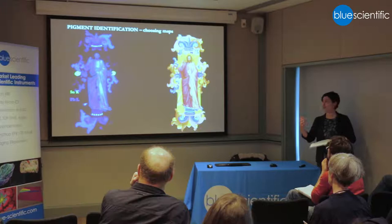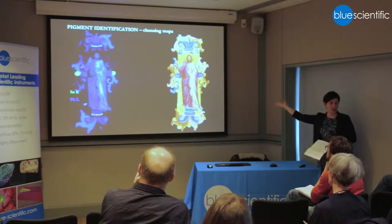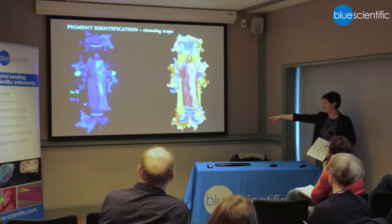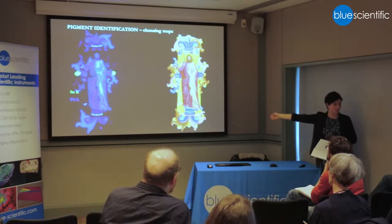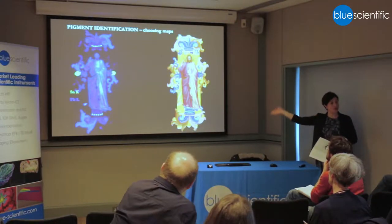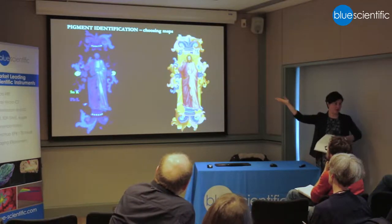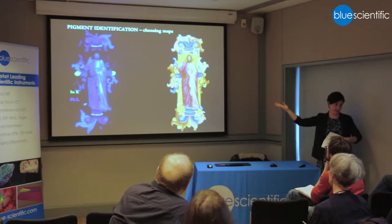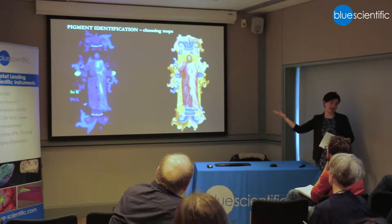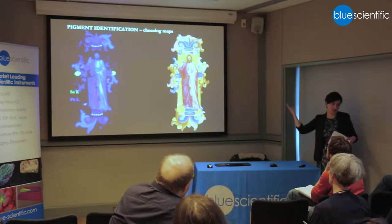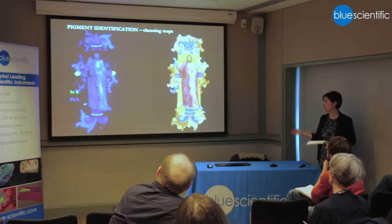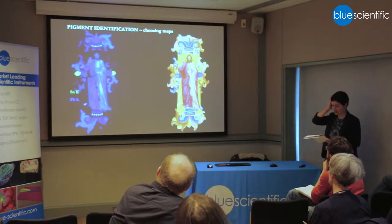I'm looking at the image knowing that an orange area is probably red lead, although it could contain lead white as well. I don't have a way of telling if there could be both red lead and lead white in some areas — just the lead map is not going to tell me that.